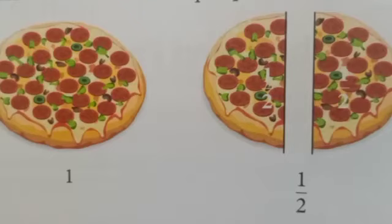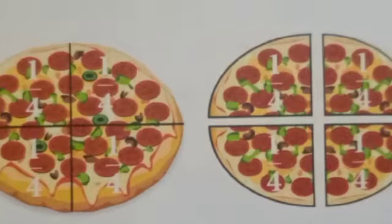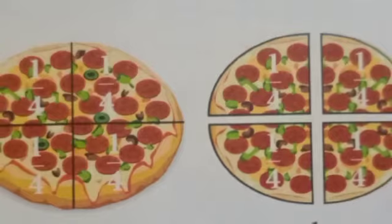Biju made one pizza. Mini cut it into two equal parts. Now each part is one half of the whole. A part of a whole is also called a fraction. Biju cut this again to make four equal parts. Now each part is one quarter of the pizza. One half is written as 1/2, and one quarter is written as 1/4.